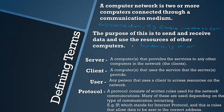A protocol consists of written rules used for network communications. Many protocols are used depending on what type of communication is occurring. For example, IP — Internet Protocol — is one that most people have heard of. The rules in this protocol basically allow data to be sent to the correct address, and it is used when sending any data to an internet source or another computer.